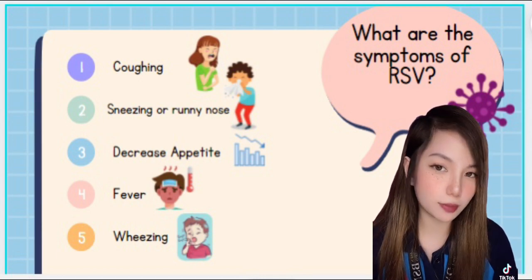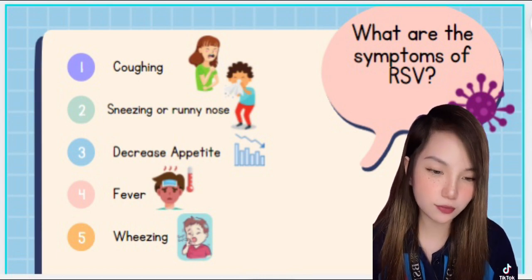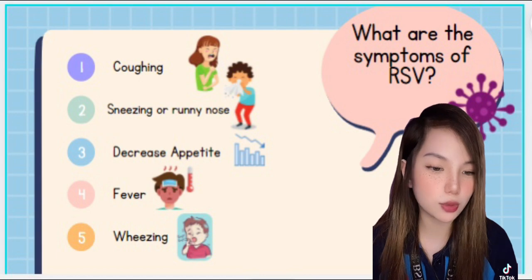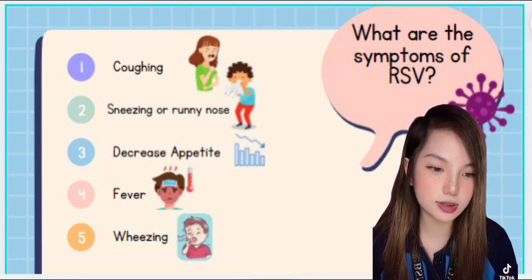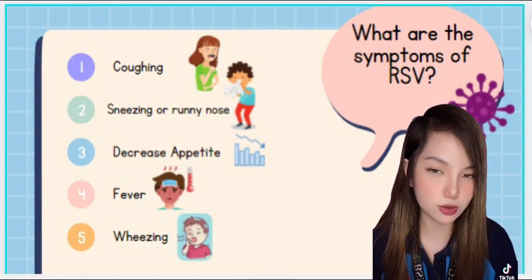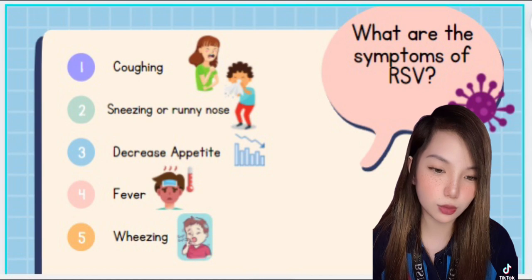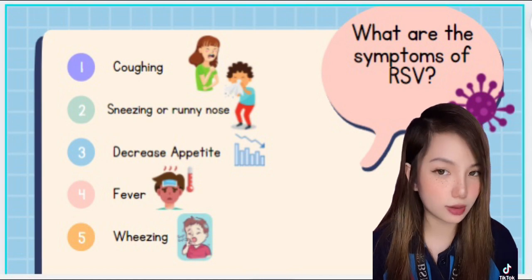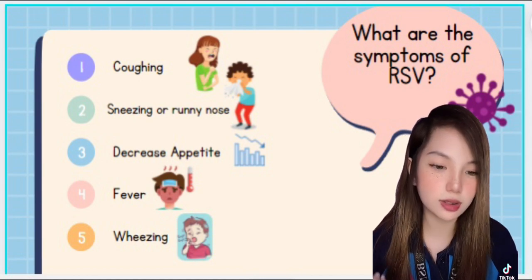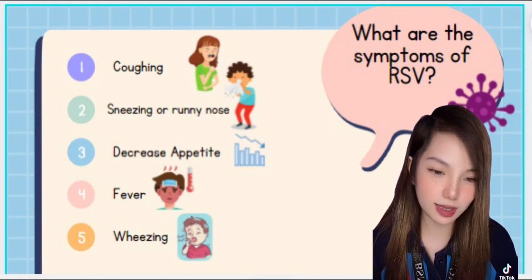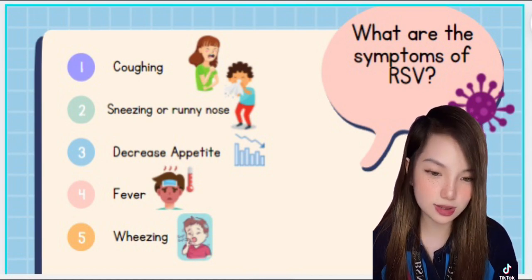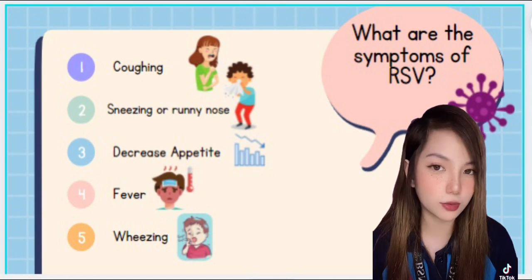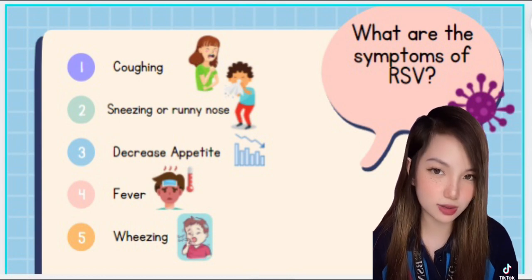What are the symptoms of respiratory syncytial virus infection? The symptoms of RSV infection usually start about four to six days after infection. They include runny nose, decreased appetite, cough, sneezing, fever, and wheezing.